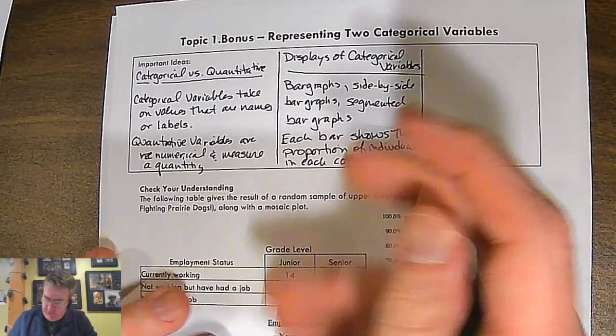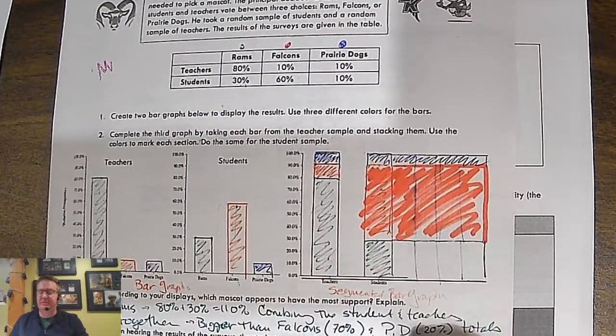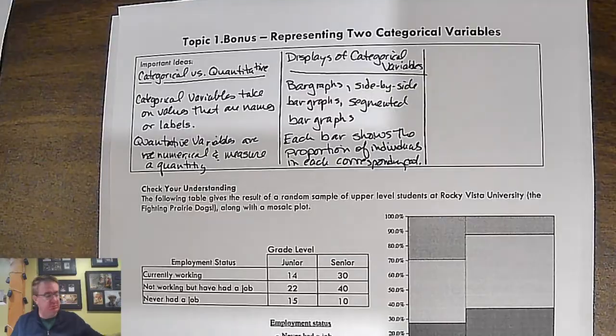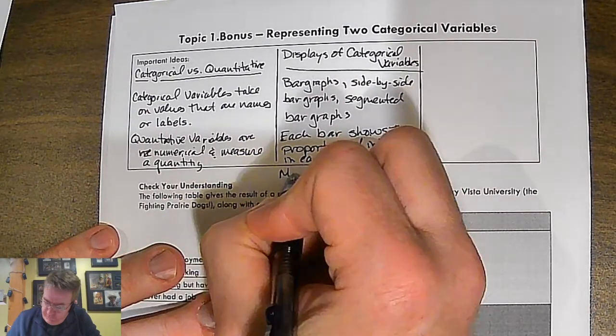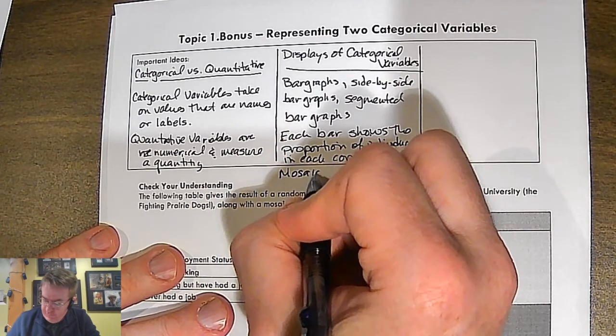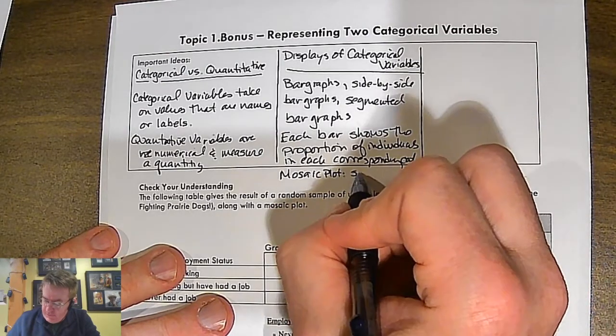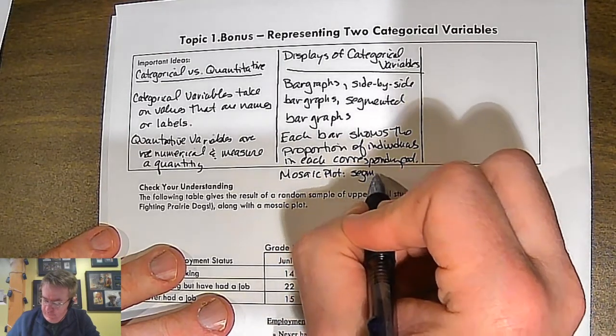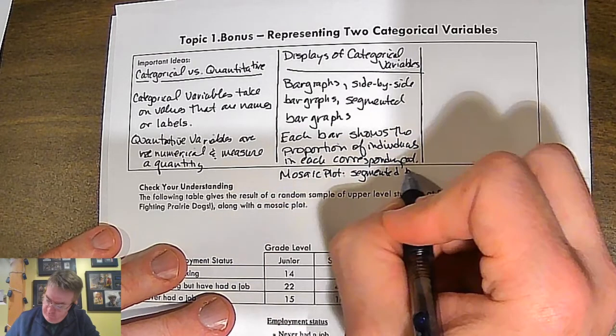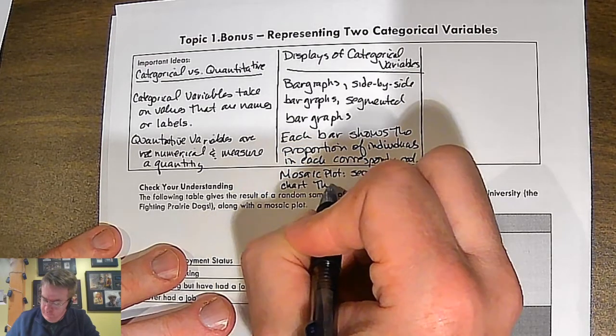Now, we also have something called what we just did, this thing right here. Mr. Hayes, that's not a segmented bar chart anymore because you made it fatter. So that's called a mosaic plot. And what happens there is it's a segmented bar chart that's been modified.